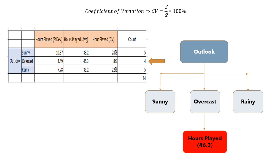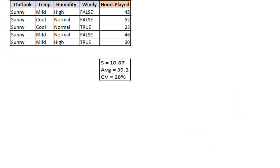Now we have to split the sunny and rainy nodes. Sunny has 28% coefficient of variation, so let's further split it. We repeat the same process using the subset of rows where outlook equals sunny. Note that I am not taking any new dataset — I am just extracting rows having the value sunny in the outlook column, and I will do the same for rainy later on.